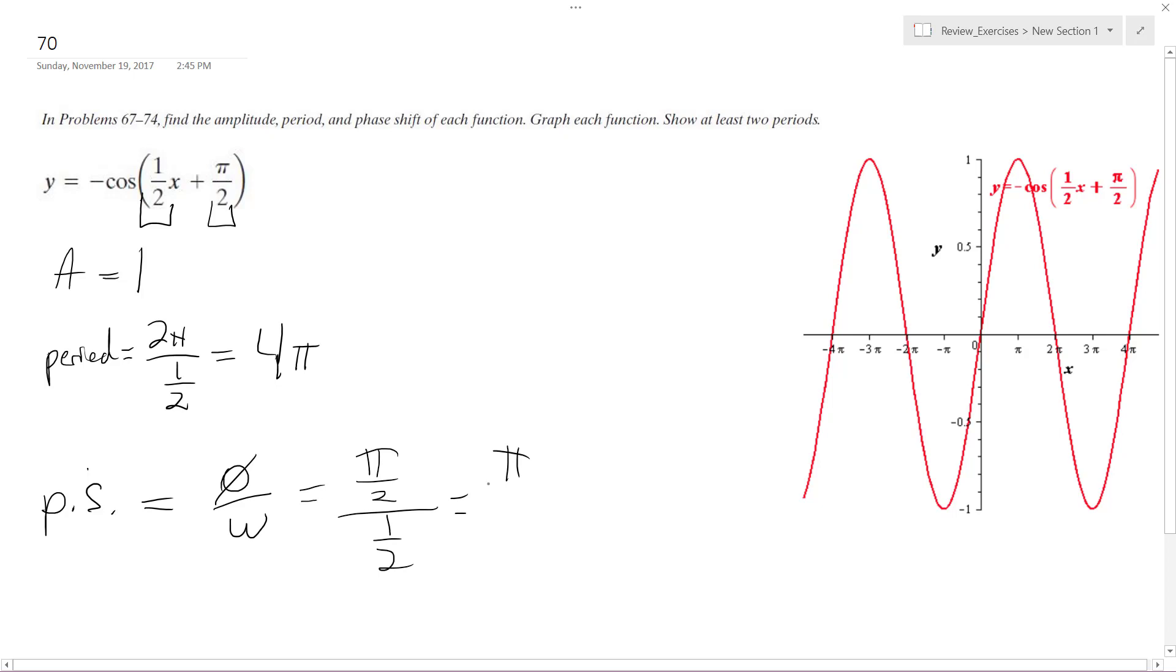pi over two divided by one half, which is equal to pi over two, times two over one. These cancel off, and we end up with pi for the phase shift.